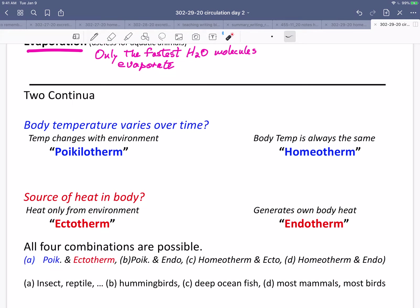So we have animals like insects whose body temperature changes with the environment, and mice whose body temperature is always the same.